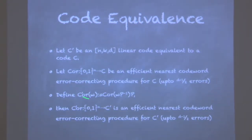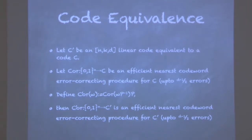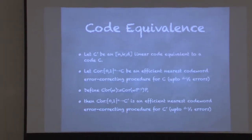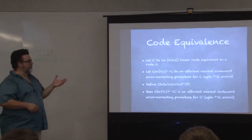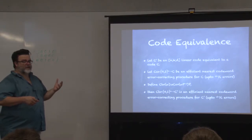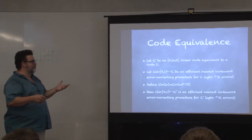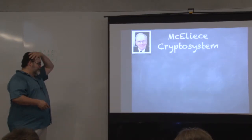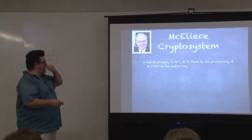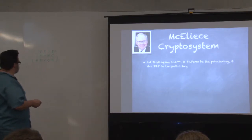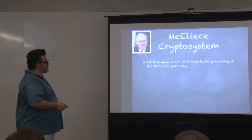The resulting correction procedure for C prime is as efficient as the original one, except for the multiplication by these matrices, which is very low cost. We're going to use this fact in our construction of a cryptographic scheme — essentially building a system where there's a private representation of the code in which we know an efficient correction algorithm, and we transform that into a public version such that it's difficult for everybody else to figure out how to do error correction.